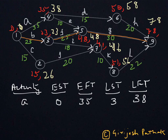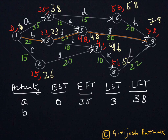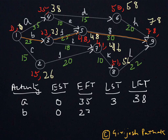Now for activity B: to find the Earliest Start Time we look at the node where activity B starts, which is node 1, so the Earliest Start Time is 0. To find the Earliest Finish Time, we add the activity time to the Earliest Start Time. Activity B has a duration of 23 days, so 0 plus 23 gives an Earliest Finish Time of 23.